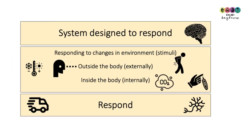Your nervous system is all about how your body detects and responds to changes in its environment — how it responds to external or internal stimuli. So outside the body, stimuli could be light and temperature, and inside the body, it could be carbon dioxide or lowering blood glucose levels.